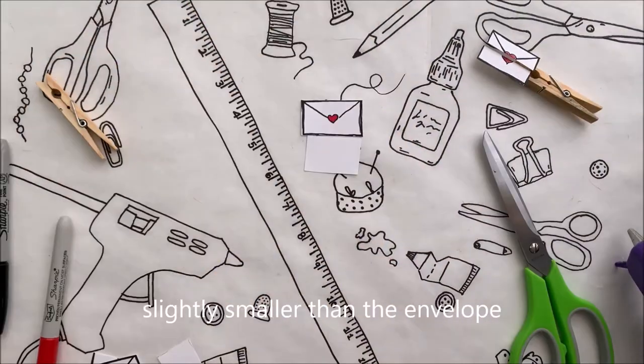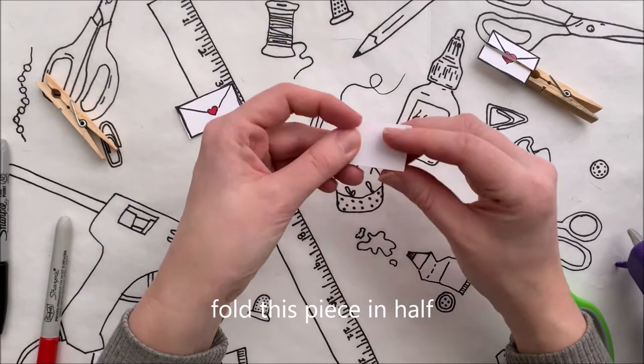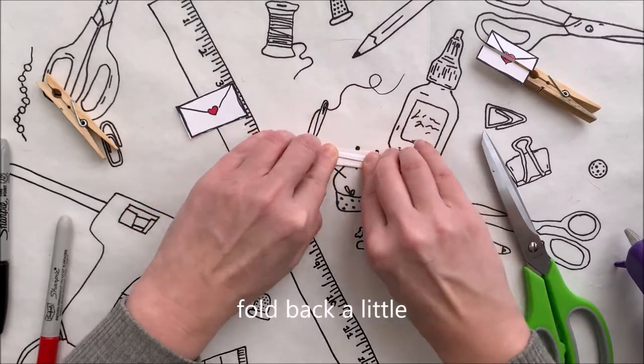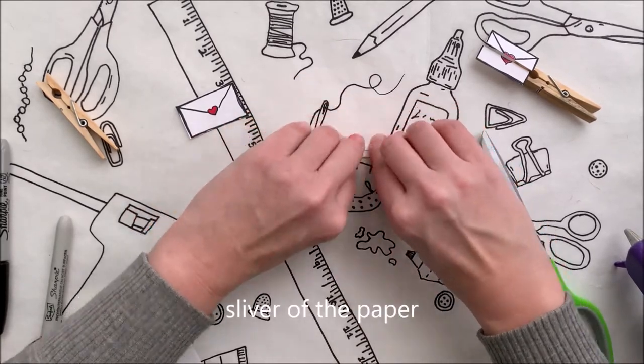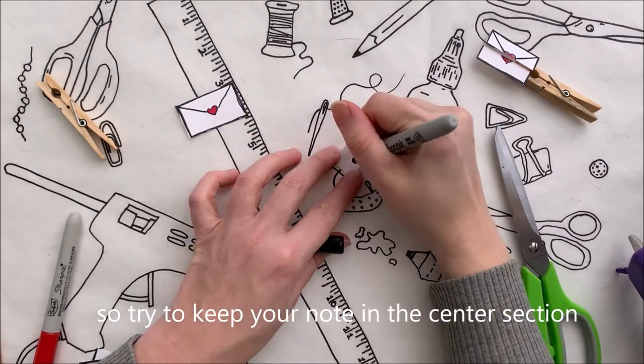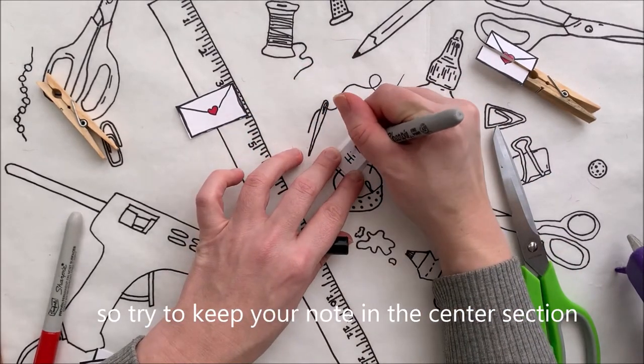Cut out a second piece of paper, slightly smaller than the envelope. Fold this piece in half. Then on the top and the bottom, fold back a little sliver of the paper. The top and the bottom fold will be used for the glue. So try to keep your note in a center section.